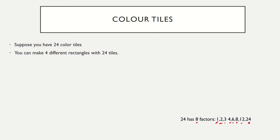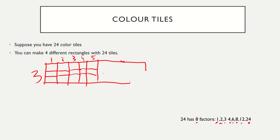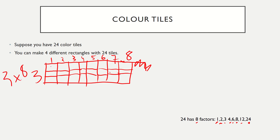I'm going to show you a couple of ways of showing this. I'm going to do three times eight to start. What we're going to do is draw a rectangle, and then I'm going to draw some rows — one, two, three rows — and I'm going to add eight columns. So I have three rows and eight columns, and three times eight gives us 24 squares.